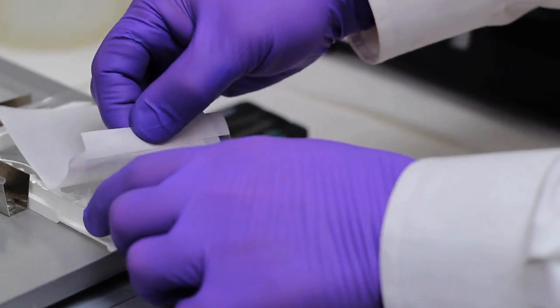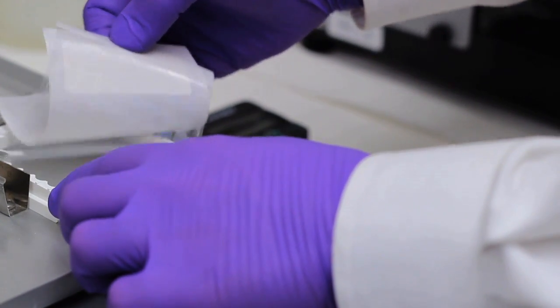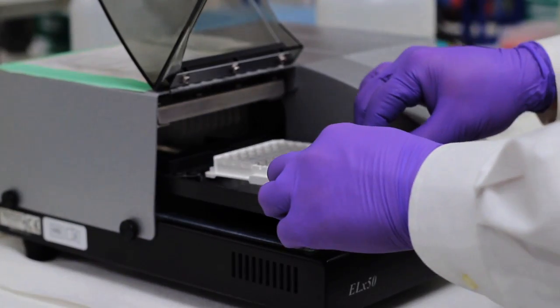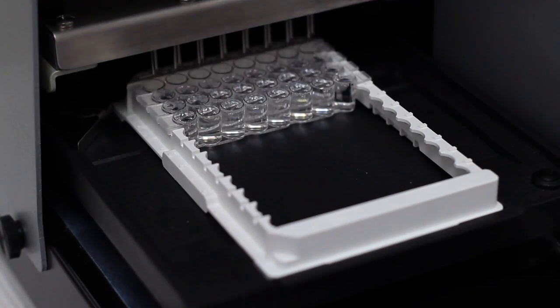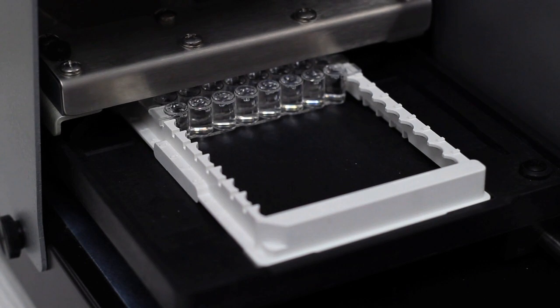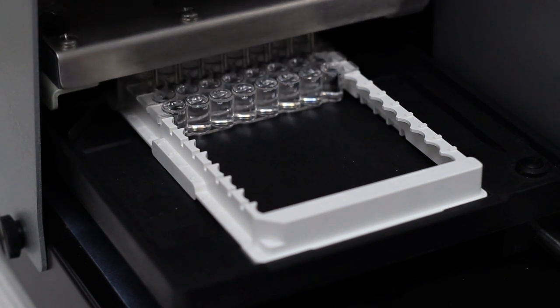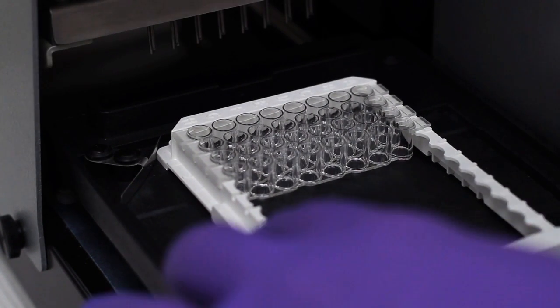After incubation, carefully remove the plate sealer and place the plate onto the rack of an automated plate washer. Program your equipment to wash and aspirate with 350 microliters of wash buffer per well. Repeat for a total cycle of three washes and aspirations. When complete, the plate should appear dry.